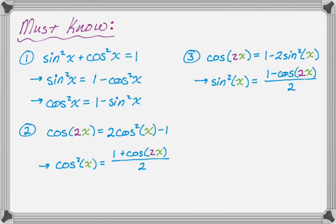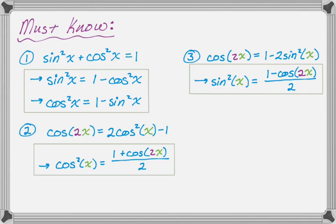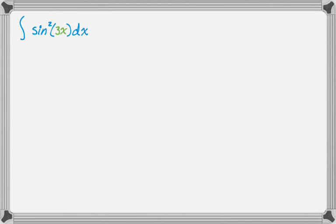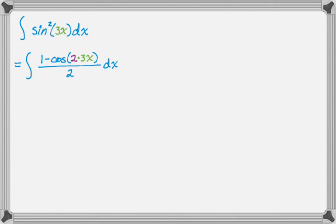Let's see how we can use them. Here's an example: the integral of sin²(3x) dx. We immediately replace sin² with the cosine equivalent, giving us the integral of (1 − cos(2·3x)) / 2 dx. This integral can be broken into two integrals, both of which you can do pretty much by looking at them — and that's a good thing. You want to get to the point where you can do these kinds of integrals just by looking.